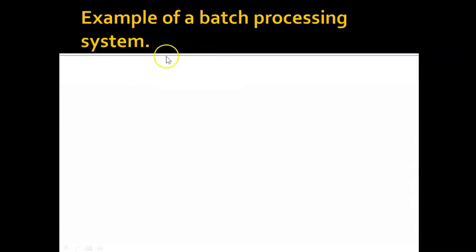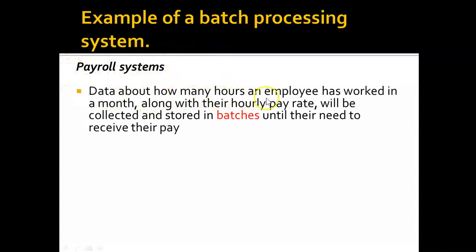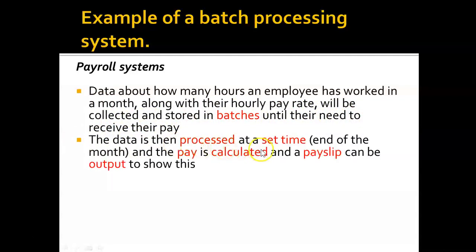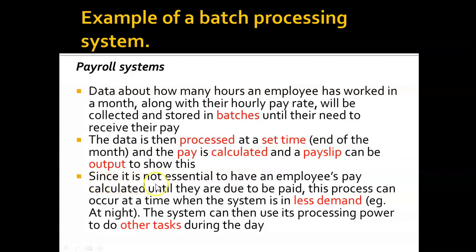In a payroll system, data about how many hours an employee has worked in a month, along with their hourly pay rate, is collected and stored in batches until they need to receive their pay. The data is then processed at a set time — for example at the end of the month — and the pay is calculated and a payslip is outputted. Since it is not essential to have an employee's pay calculated until they are due to be paid, this process can occur at night when the system is in less demand, allowing the system to use its processing power for other tasks during the day.